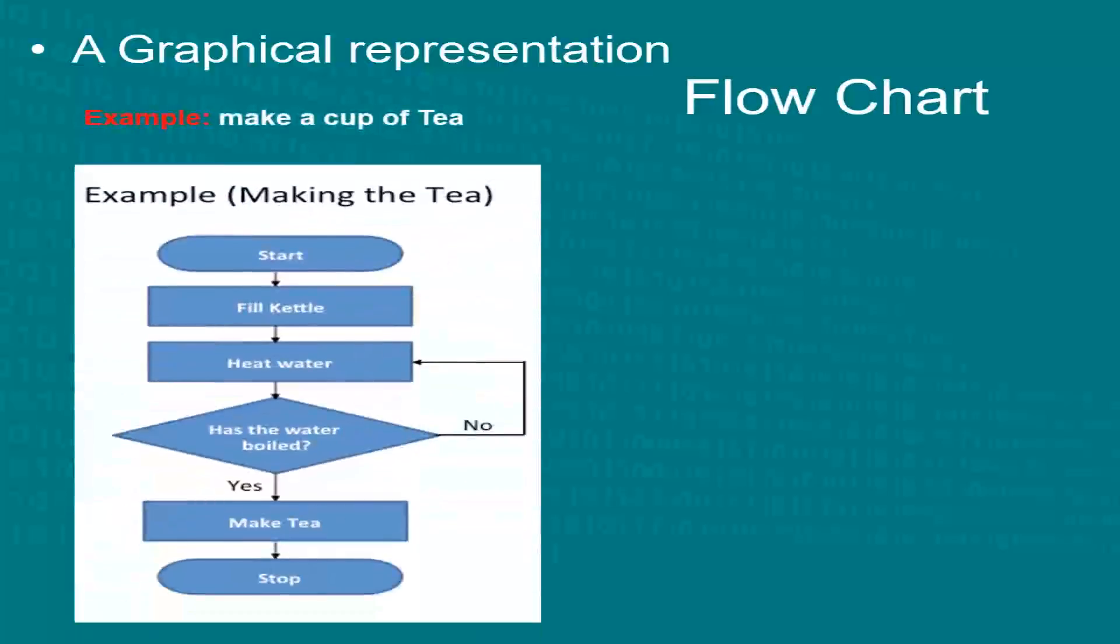Basically, a flowchart is a diagrammatical representation of the steps defined in an algorithm. Flowcharts use special shapes to represent different types of actions or steps involved in a process.